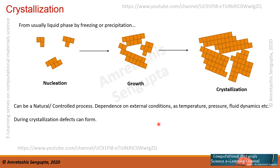For example, the growth of silicon wafers, where highly ordered and oriented silicon crystal ingots are grown from the melt — that is a controlled process. Whether in natural or controlled processes, there is always still some amount of fluctuation. Many external conditions determine how crystal growth takes place: temperature, pressure, and if it is forming from a liquid phase, how the fluid dynamics plays out. All these things will impact the crystallization, and due to that, defects can form.